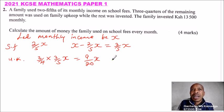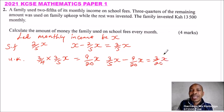So what is the balance that we get for what was invested? This is what was left after school fees, so this is 3/5 of x minus what was used for upkeep, that is 9/20. You can use your calculator to do that and you'll be able to get 3/20 of x.